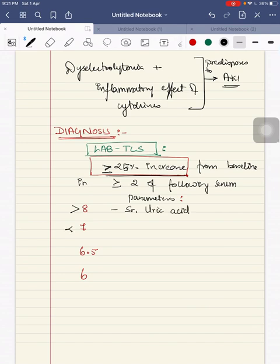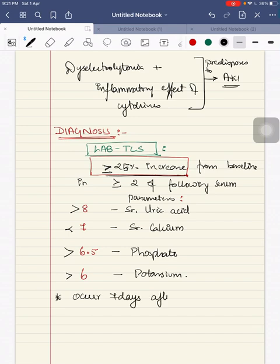So 8 here is more than 8 serum uric acid. Less than 7 serum calcium. More than 6.5 phosphate. More than 6 potassium. This is the lab criteria for tumor lysis syndrome. This can occur 3 days prior or 7 days after the initiation of therapy.